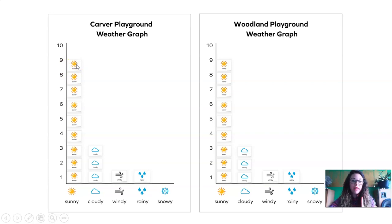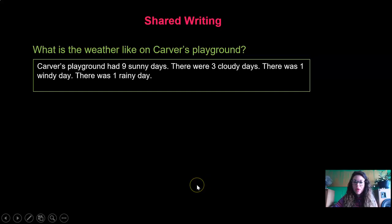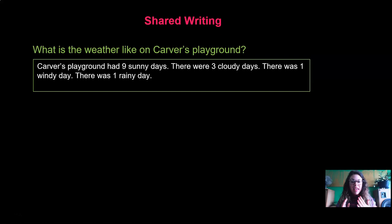We want to report that in our writing. How many cloudy days were there? There were three cloudy days. How many windy days? There was only one. How many rainy days? There was only one. So we can say: Carver's playground had nine sunny days, three cloudy days, one windy day, and one rainy day.